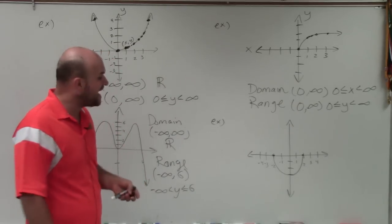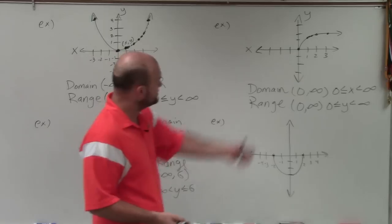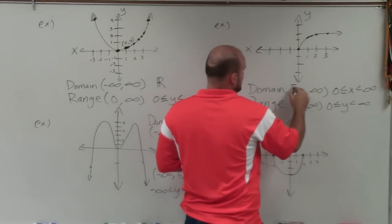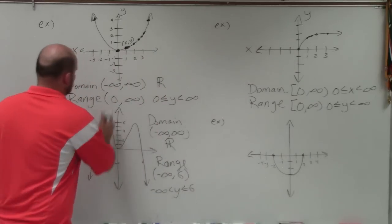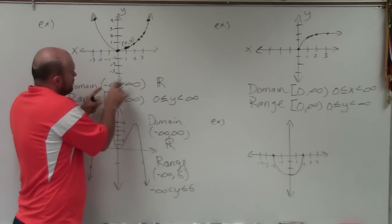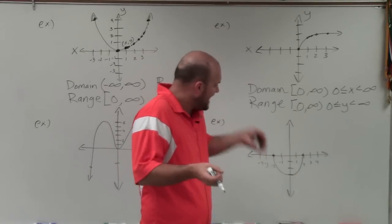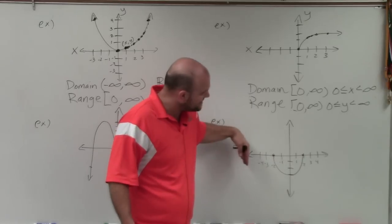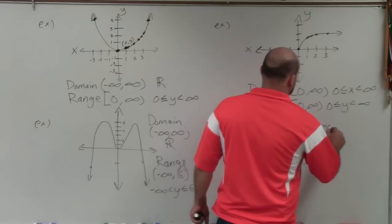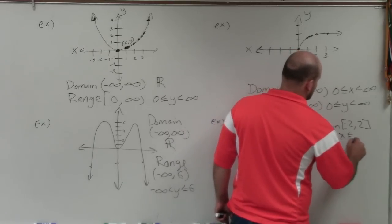Now we have a nice little semi-circle. There are no arrows on this graph. The graph is not expanding past negative 2, nor is it expanding past 2. So the only x values that are part of this graph are between negative 2 and 2. The domain is negative 2 to 2, or negative 2 is less than or equal to x, which is less than or equal to positive 2.